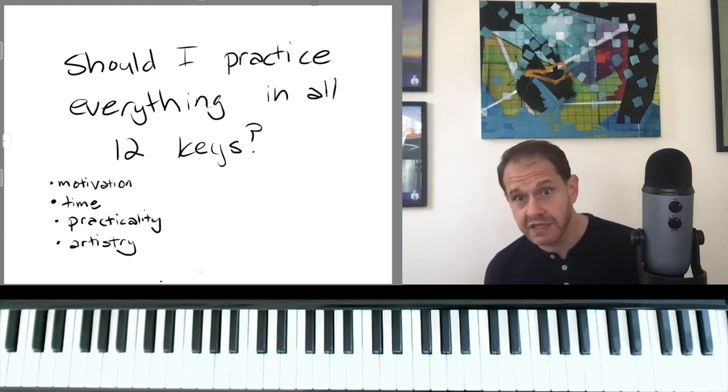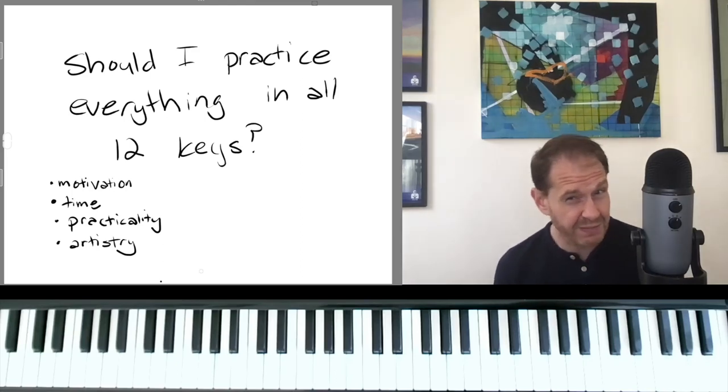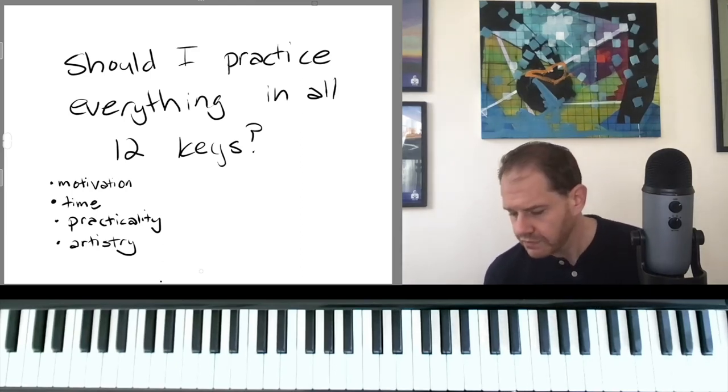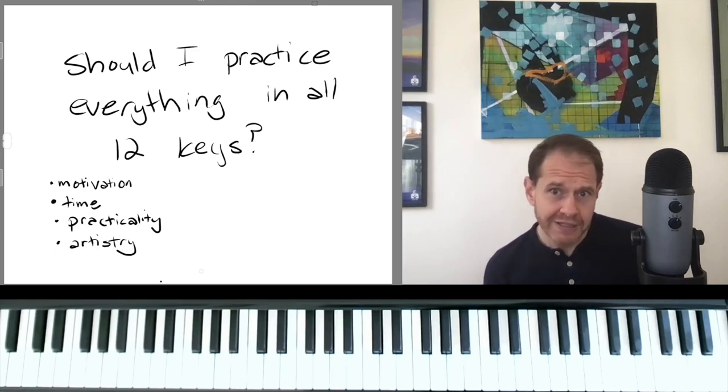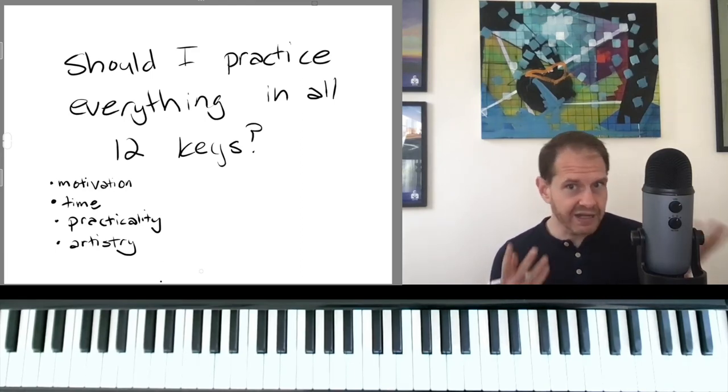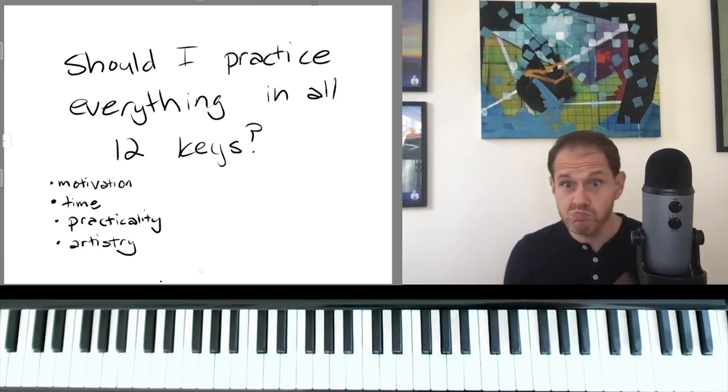A lot of composers think that different keys have different kinds of colors—that D flat is very dark, whereas once you move a half step up to D it's very bright. And so should you be playing the exact same things in D flat as in D? Maybe not.